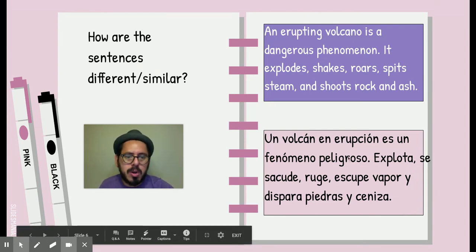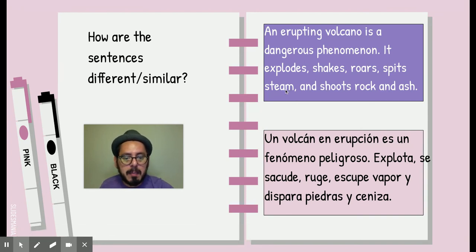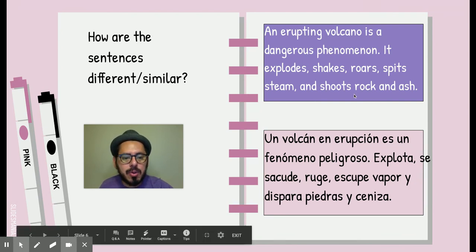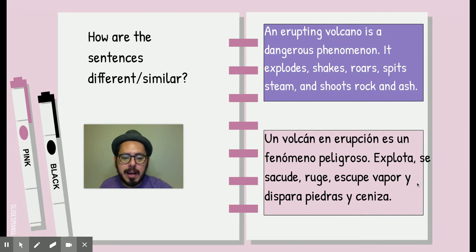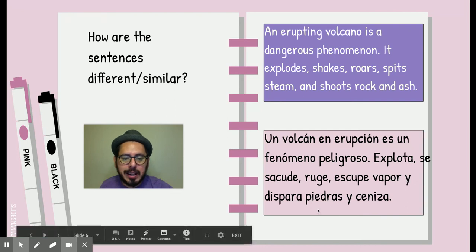Ruge, roars, spits steam. En este caso, escupe vapor. Escupe vapor. Eso sí está en el mismo orden. Aquí tenemos el verbo y el sustantivo. Verbo y sustantivo. Sí está en el mismo orden en inglés y en español. And shoots rocks and ash. Y dispara piedras y cenizas. Si se fijan, en español nos ponemos una coma para avisar que esto es otra de las cosas que hace el volcán.